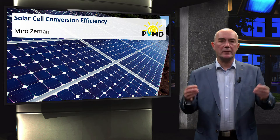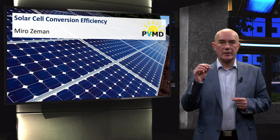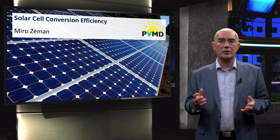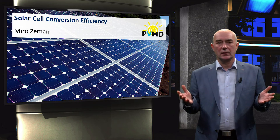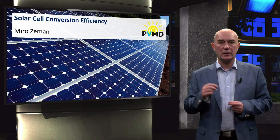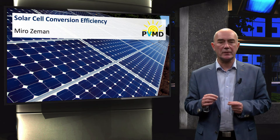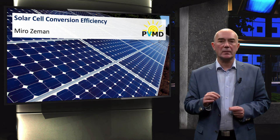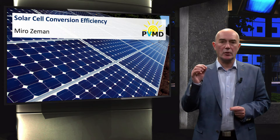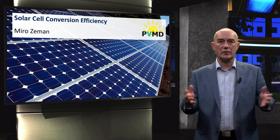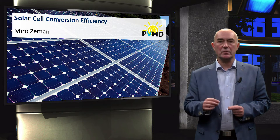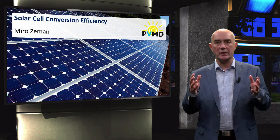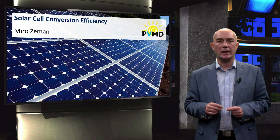As we have seen in previous videos, there are several optical and electrical losses that determine the conversion efficiency of a solar cell. How do we take all these losses into account when determining the conversion efficiency? In this video, we will guide you through the mathematical expression for efficiency and explain every component that represents a particular loss in energy conversion.